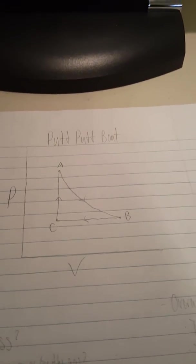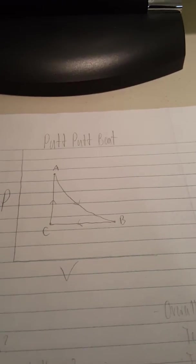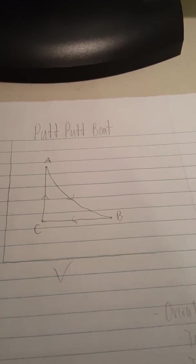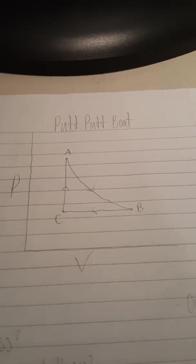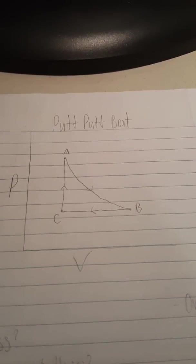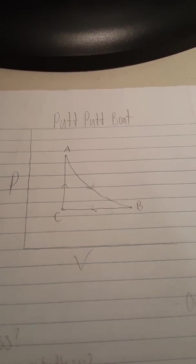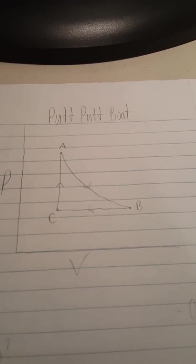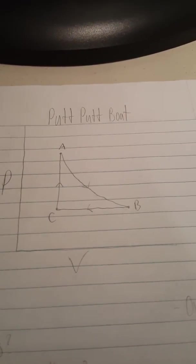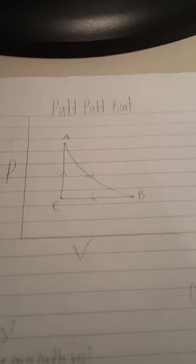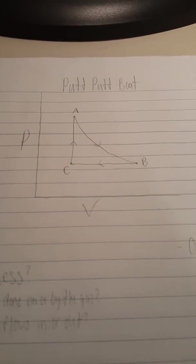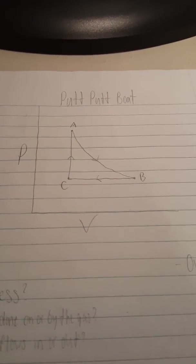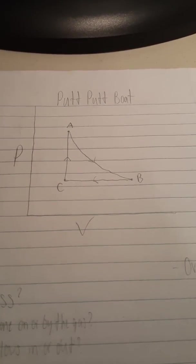Let's explain each part and what is happening to the putt-putt boat. Starting with A to B: since A and B are at the highest temperature, water must be turning to steam at this point — that's where the highest temperature reaches 100 degrees Celsius. The boat is also moving forward at this point as water is being turned into steam. From B to C, water must be going back into the engine in order to restart this process for making the boat go forward and put-putting.